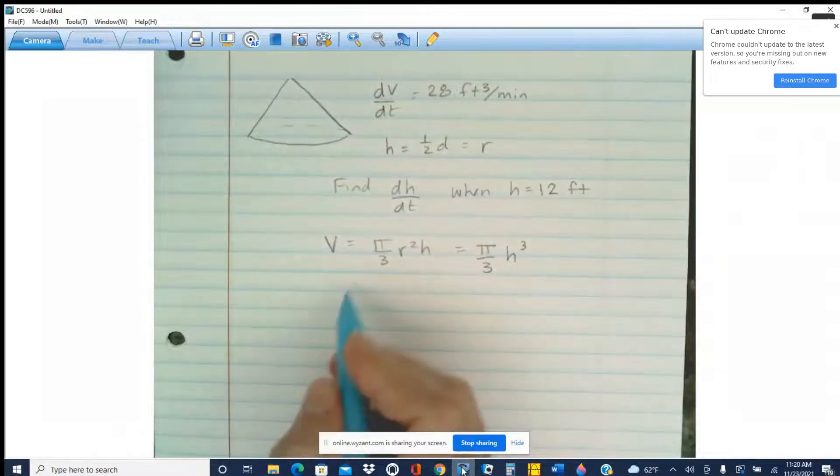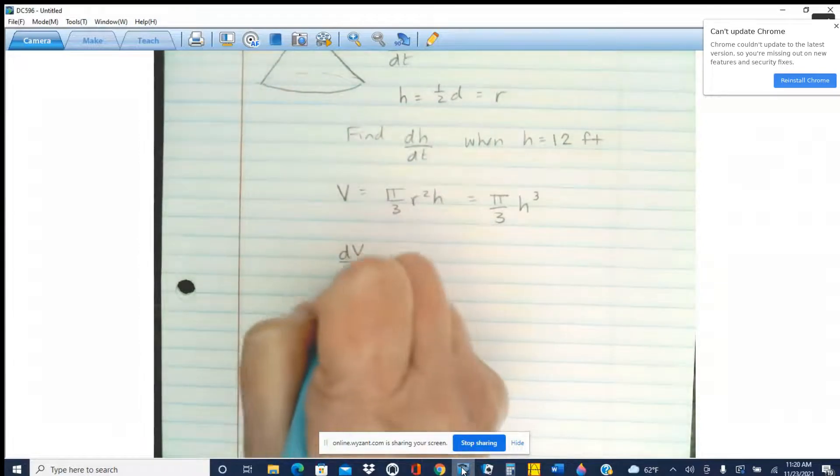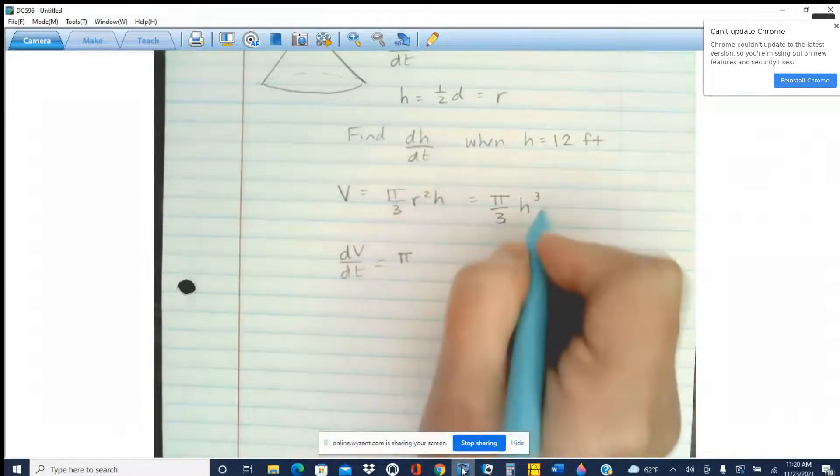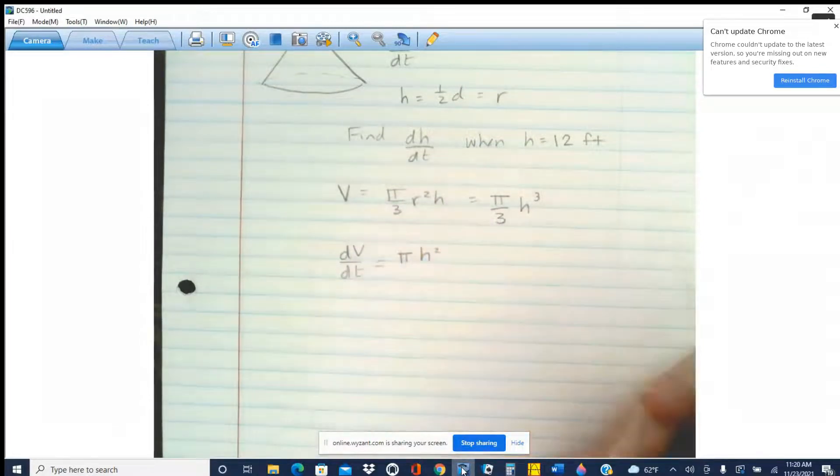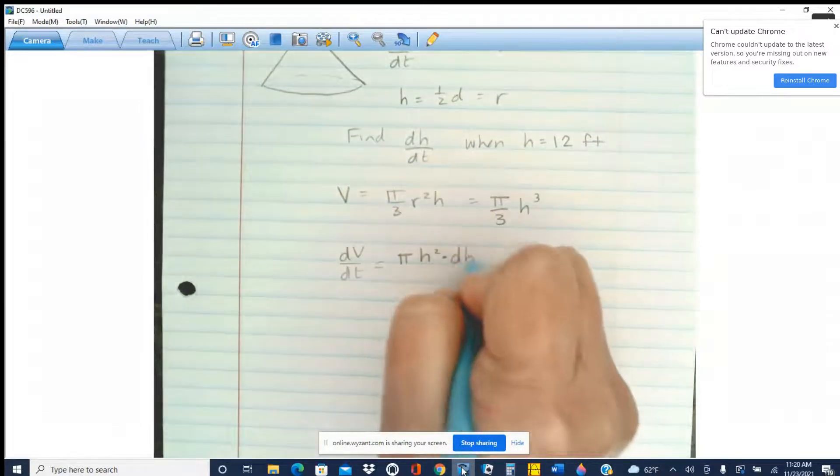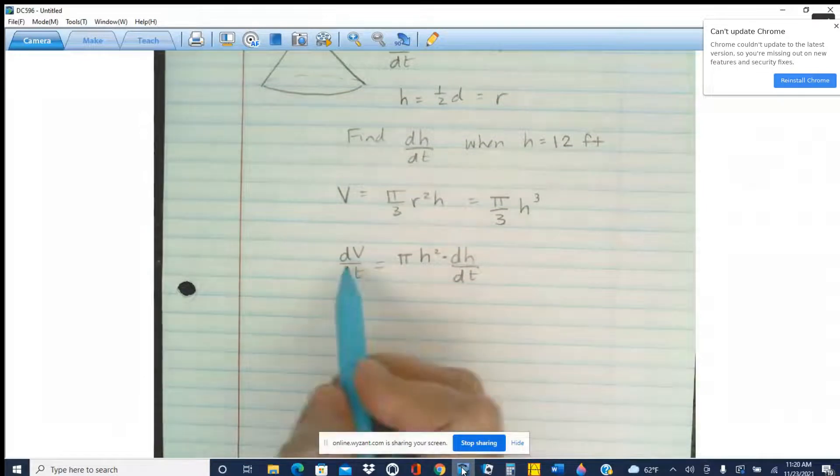And then it's time to take the derivative of both sides. So dV/dt is going to be 3 times pi over 3. So that gives me pi h squared. And remember that h is also changing, so we're using the chain rule here, dh/dt. And then we can put in our numbers and solve for our dh/dt.